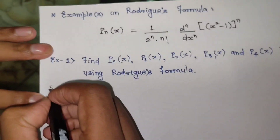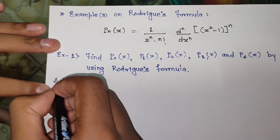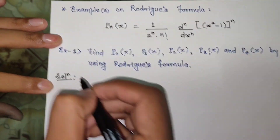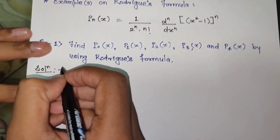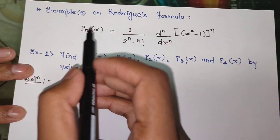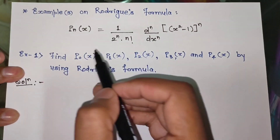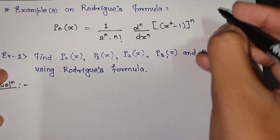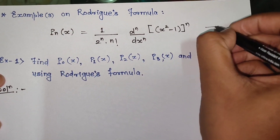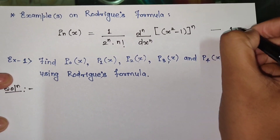We have the Rodrigues' formula, and we can write it once again — let us call this equation number 1.